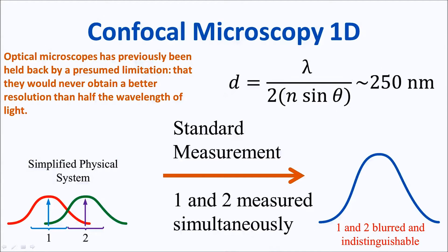Let's use an overly simplified physical system to demonstrate the diffraction limit. Two fluorophores are right beside each other within a diffraction-limited plane. As a consequence, their wave functions overlap, and if they are imaged using a standard confocal microscope, we get this blurred curve on the right, and we have no individual information from the first fluorophore or from the second fluorophore — we just have this blurred curve, and we cannot get any more information.